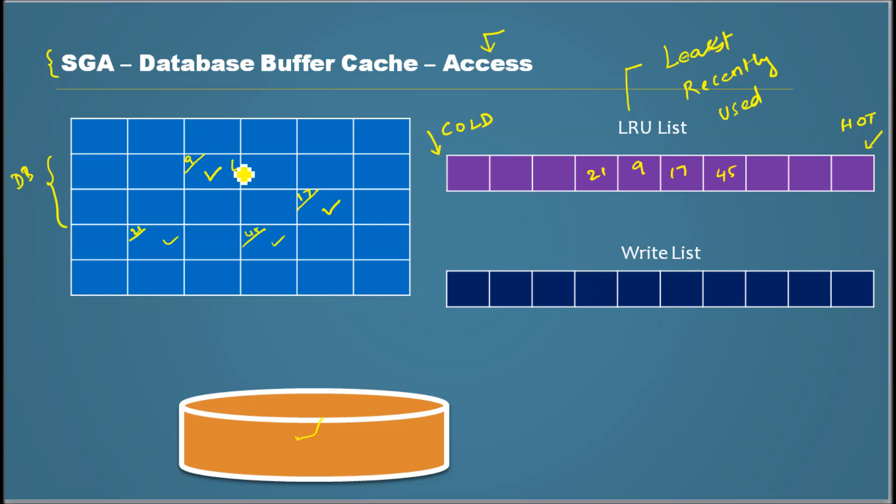After a while, this block gets used by a process again. Whatever data is in there was needed by another process or maybe the same process. So this 9 gets moved somewhere to the hot side, the hot end. Probably the number 9 gets moved here.